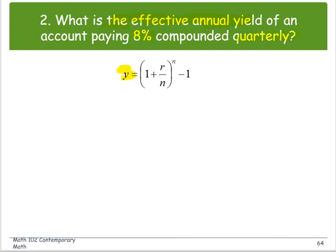The formula to compute the effective annual yield, or y, is the quantity 1 plus r over n raised to the power n, and then subtracted by 1. Based on information we know,